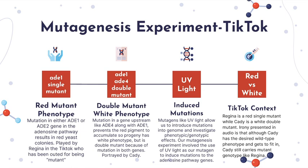In haploid yeast cells, a mutation in either AD1 or AD2 results in red yeast colonies. However, mutations in any genes upstream — that would be AD4 through AD8 — prevent the accumulation of this intermediate that is converted to the red pigment, resulting in a cream or white adenine requiring mutant phenotype.